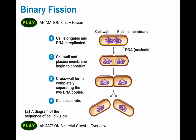The cell elongates. Then something called a septum, or a cross wall, begins to form and the plasma membrane starts to shrink, so it looks like it's starting to make two separate cells. The DNA copy of one goes over here, the DNA copy of the other goes over here. Then after the cell wall is fully formed, the cell can split into two cells.